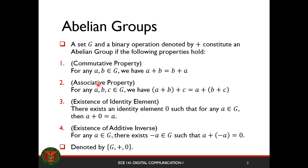The associative property: if you have three distinct elements from your set G, we have associativity in our addition operation. The existence of an identity element: there exists an element zero such that for any a element of G, a plus zero is equal to a. And finally, the existence of an additive inverse: for any element a, there exists a negative of that a such that if we add them, we get the identity element of your abelian group G.